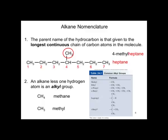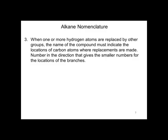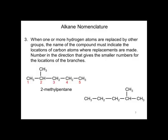When one or more hydrogen atoms are replaced by other groups, the name of the compound must indicate the locations of the carbon atoms where the replacements are made. Number in the direction that gives the smaller numbers for the locations of the branches. This is a 5-carbon chain — it is 2-methylpentane. This is also a 5-carbon chain, but we would not number it 4-methylpentane. That is incorrect.